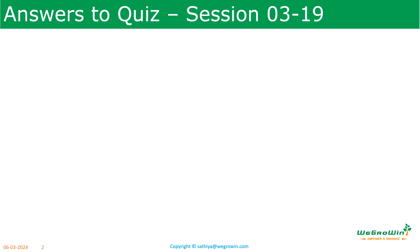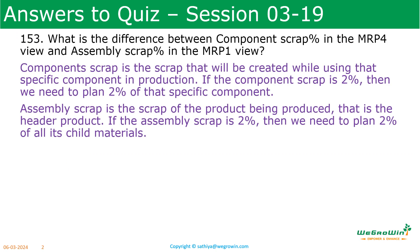Before going to the session, let us see the answers for the previous session. What is the difference between component scrap percentage in the MRP 4 view and the assembly scrap percentage in the MRP 1 view? Component scrap is the scrap created while using that specific component in production. For example, if the component scrap is 2 percent, we need to plan 2 percent extra of that specific component. Assembly scrap is the scrap of the product being produced — the header product. If the assembly scrap is 2 percent, then 2 percent of all child materials will also be planned in addition.